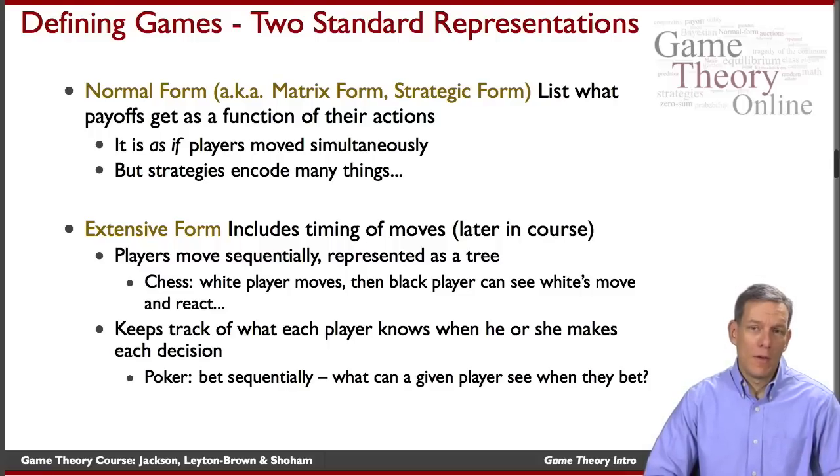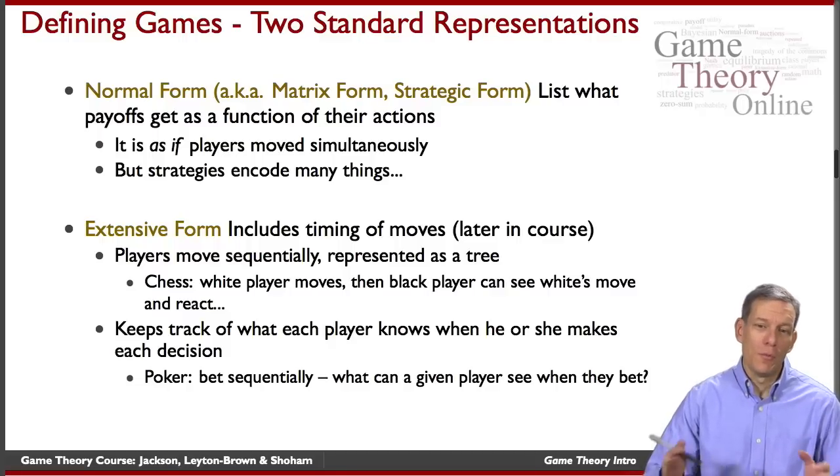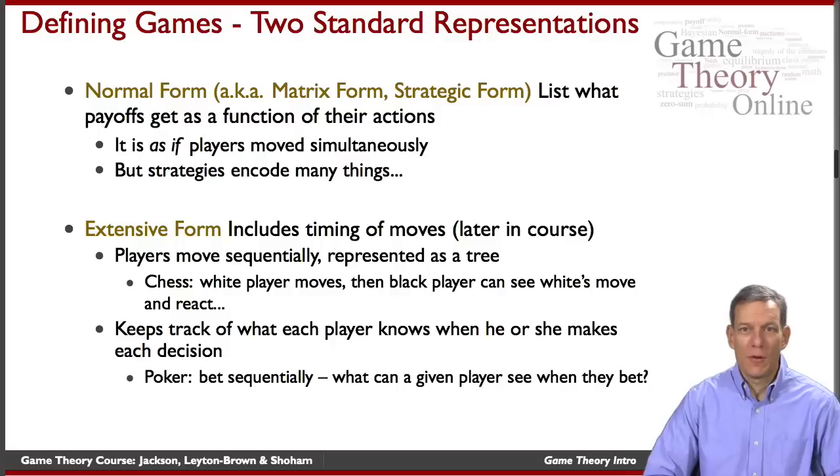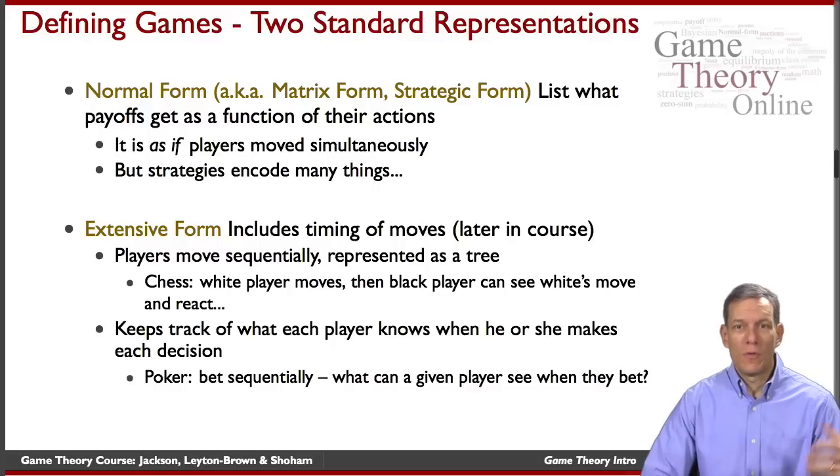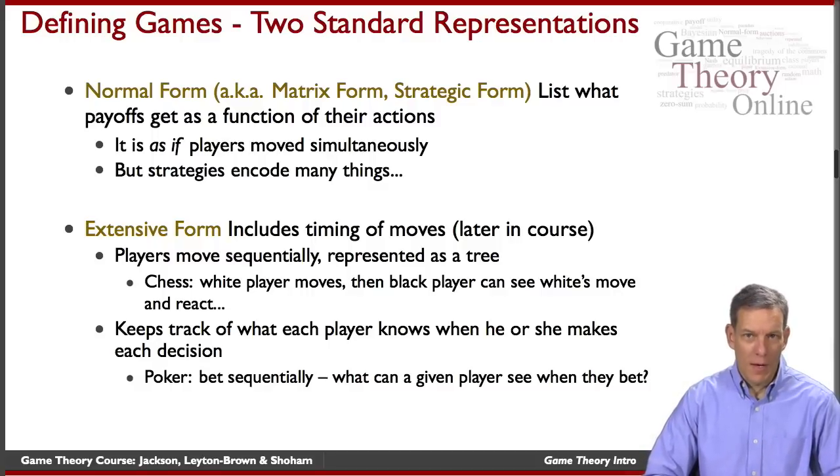The other alternative representation is what's known as the extensive form and that includes more explicit timing in the game. Who moves at what point in time. That's going to be represented often as a tree. For instance in chess, the white player generally moves first and the black player can see the move by the other player and react to that. That's going to be better represented as a tree than in normal form. It keeps track of what players know when they move. In poker somebody moves first and makes a bet, but the other player only sees the bet and not necessarily the cards that the other player sees. In some cases we'll have sequential games where players will have different information at different points in time, and we'll want to talk about modeling that explicitly too.